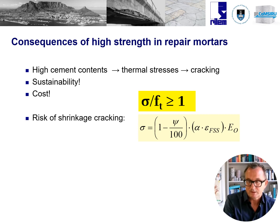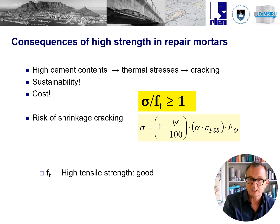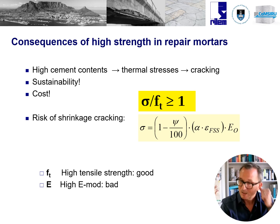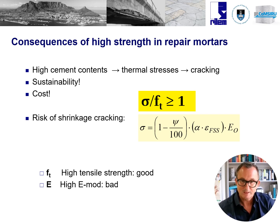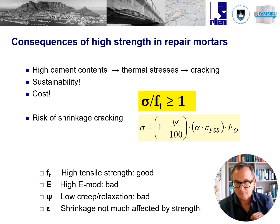Looking at the risk of cracking: once the stresses exceed the strength, cracking occurs. Looking at the effects of high strength — a high strength of the mortar gives you a higher crack resistance, which is good. However, that is related to a high elastic modulus, which is bad because it increases the stresses. A high strength is also related to low creep and relaxation, which is also bad. So you have one good factor and two bad factors.